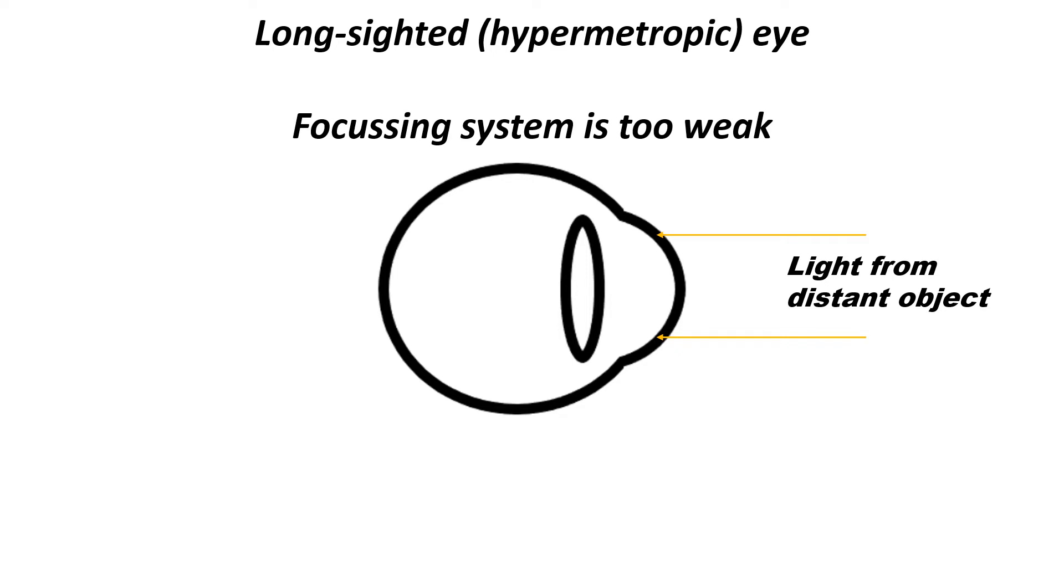Now, in a long-sighted eye, the focusing system is too weak. So when light from a distant object enters the eye, the image is not formed onto the retina, but rather somewhere behind the retina, as shown here.